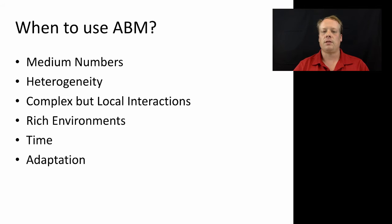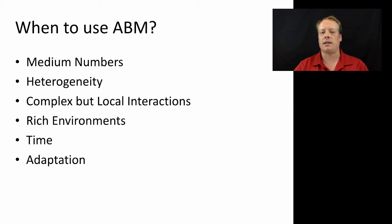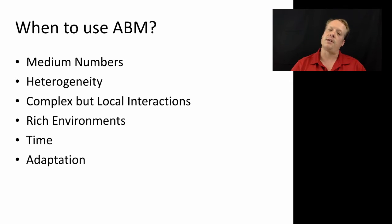The last two — time and adaptation — are different. Time is almost a necessary condition; almost all agent-based models are used to study temporal systems. And adaptation is a sufficient condition — if a system you want to study contains adaptation, you almost need to use agent-based modeling to understand that system.